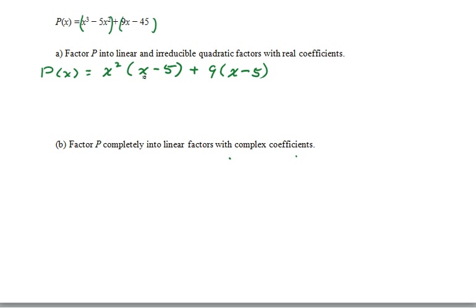This confirms that we have a common factor. So, we can factor out the x minus 5 and we're left with x squared plus 9.